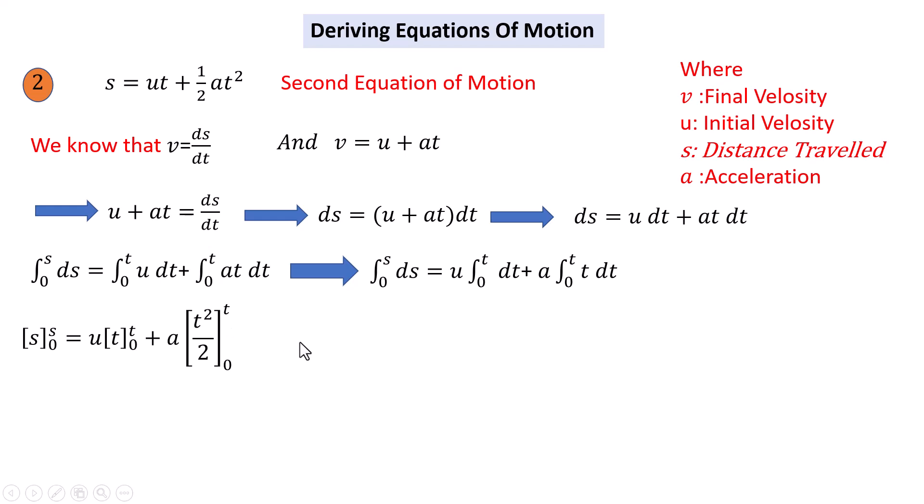If we put the boundaries, we get s minus 0 equals ut minus 0 plus a times t squared over 2 minus 0 squared over 2.